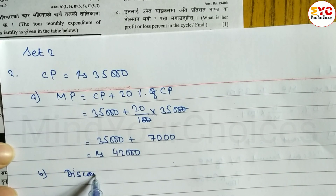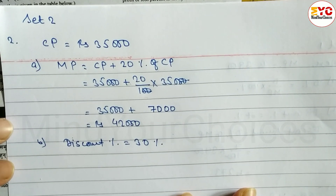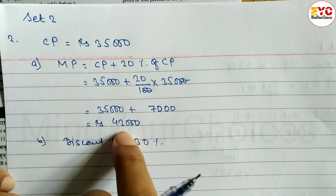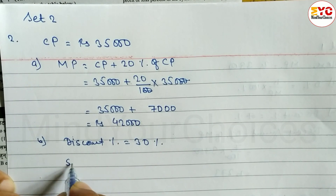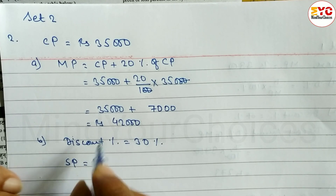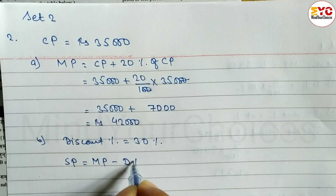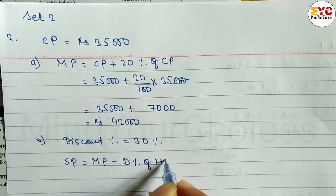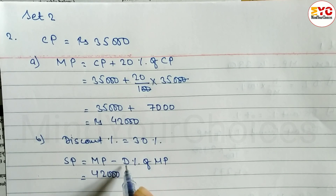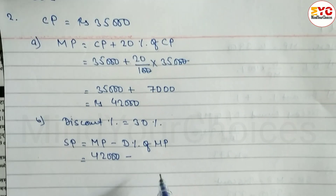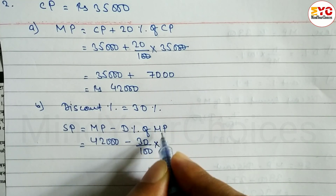Discount percent is equal to 30%. Now we need to find the selling price. The shopkeeper's advertised price is 42,000. The formula for SP is: SP = MP minus discount percent of MP. This is an important formula — learn it. MP is 42,000, so write: 42,000 minus 30% of MP.